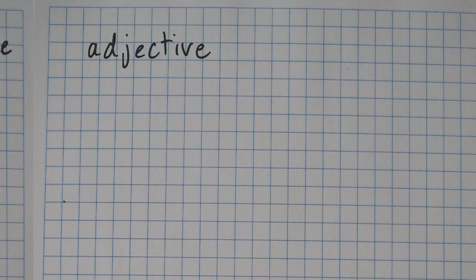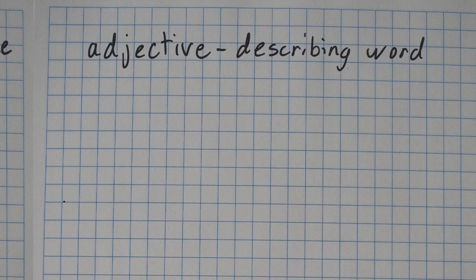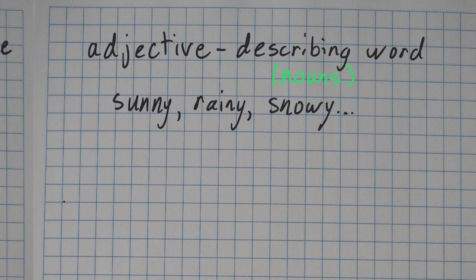So most of you know a simple definition of an adjective, which is a describing word. But it's important to know that adjectives describe nouns. And all of your words here that are adjectives are describing the weather: sunny, rainy, snowy, etc. These are all words describing the weather. They're all adjectives.